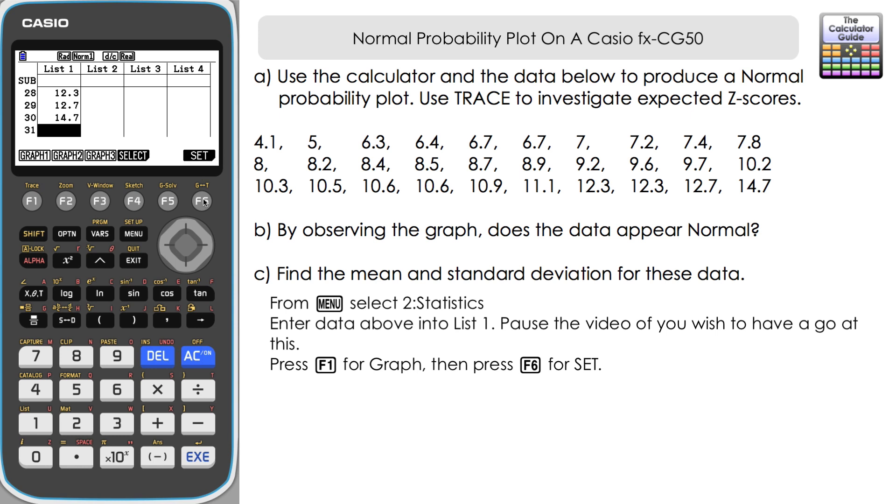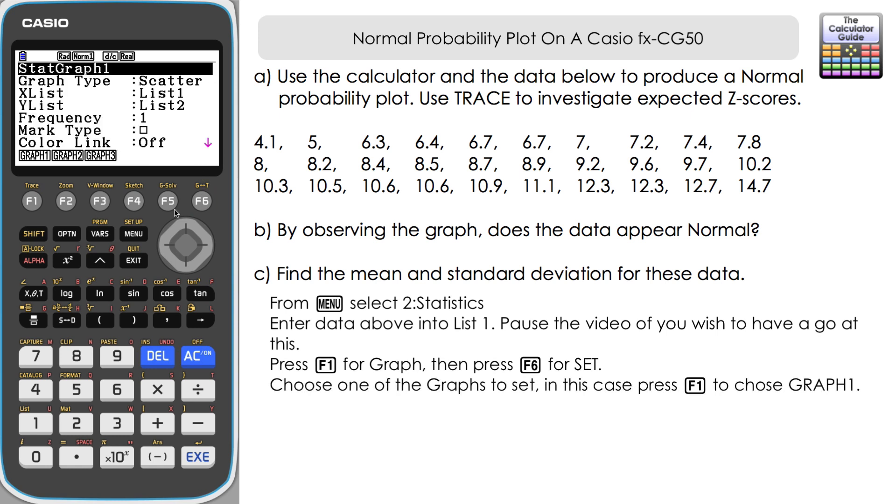So press F6. Now I'm on the default here. I conducted a reset before we started this video. Yours may be different depending on if you've used this feature before for other graphs. But at the moment, graph one, graph two and graph three are all set to the default of a scatter graph.